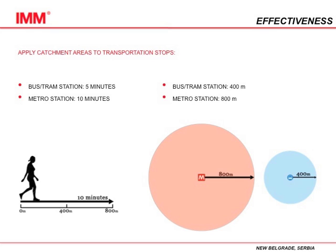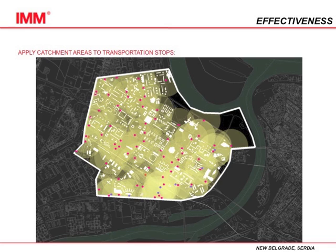Now we can apply this into our map. Here are the catchment areas applied to our stops. We can see where the higher density and lower density of catchment areas are located in this intermediate scale map.